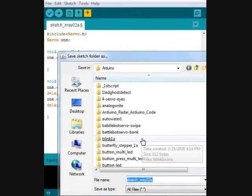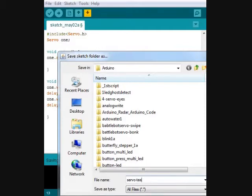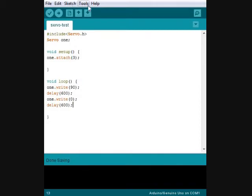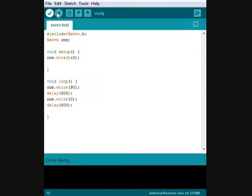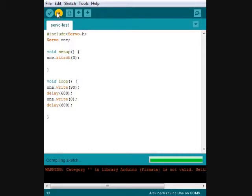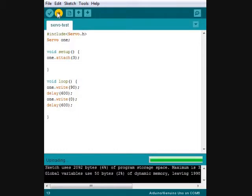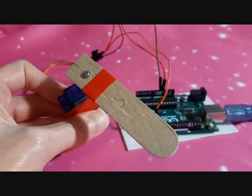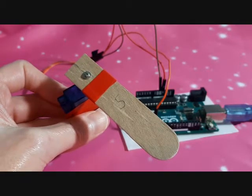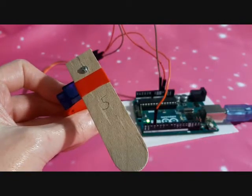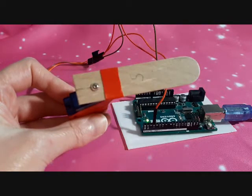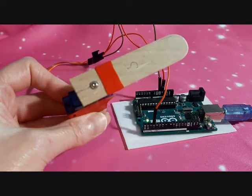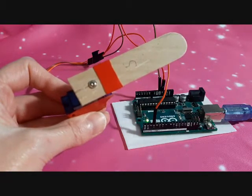Now save it as something that you're going to remember what it is. Make sure that your Arduino is hooked up and it's on the right com port. And you see it moves from 90 to 0. Fascinating.